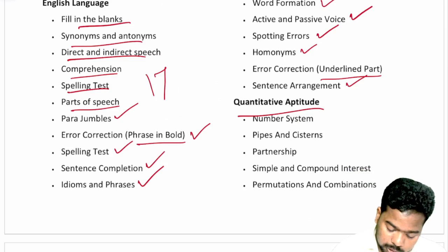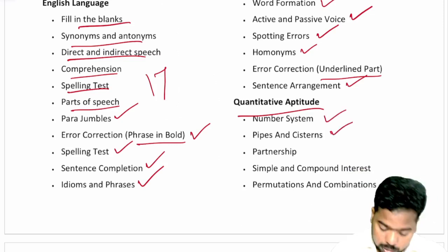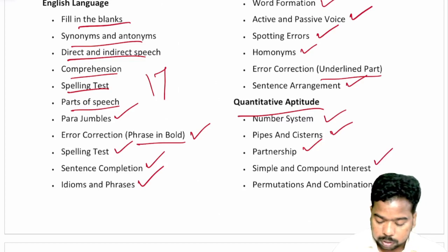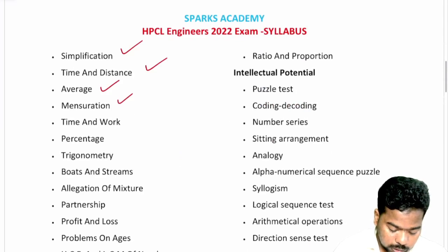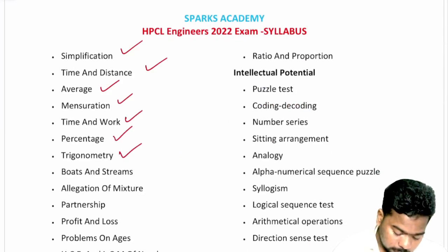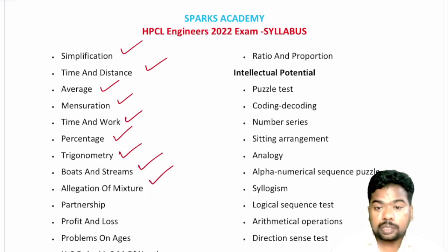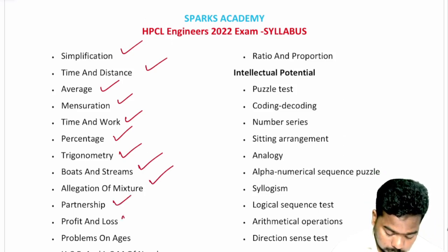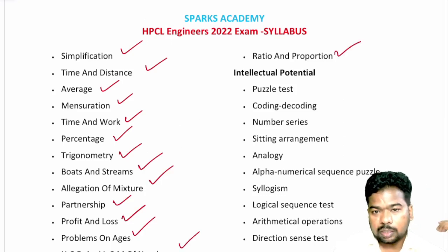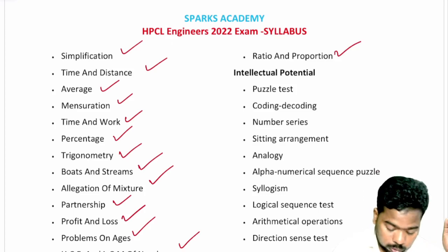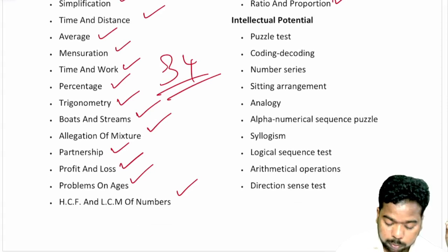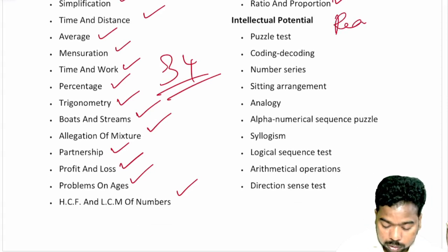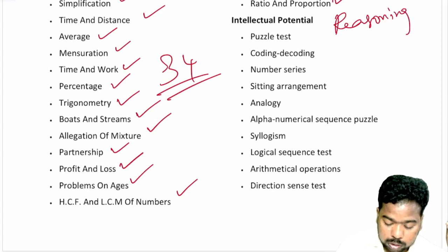The quantitative aptitude section covers topics such as number systems, pipes and cisterns, partnership, simple interest, compound interest, permutation and combination, simplification, time and distance, averages, mensuration, time and work, percentage, trigonometry, boats and streams, mixtures and allegations, profit and loss, problems on ages, ratio and proportion — totaling around 34 questions.